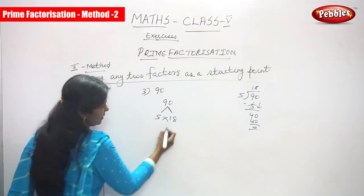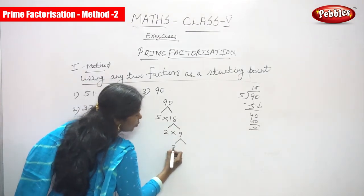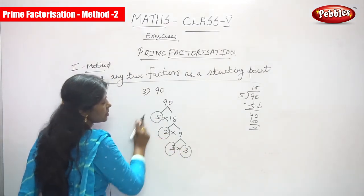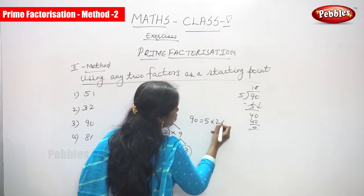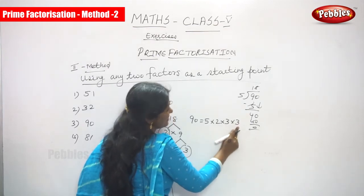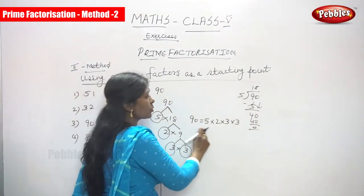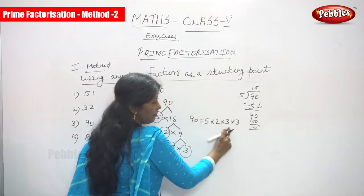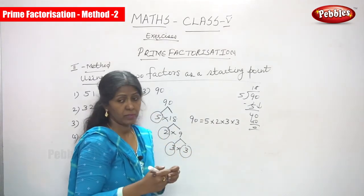Next, 18 splits as 2 into 9, and 9 splits as 3 into 3. So 90 is equal to 5 into 2 into 3 into 3. Checking: 5 twos are 10, 10 into 3 is 30, 30 into 3 is 90. Here 5, 2, and 3 are all prime numbers, so this is prime factorization.